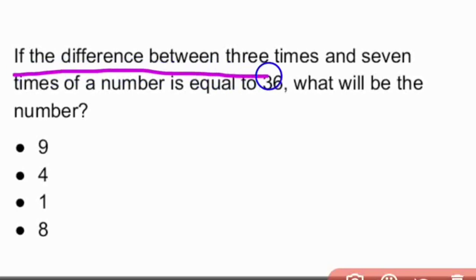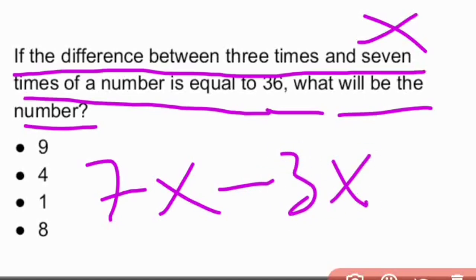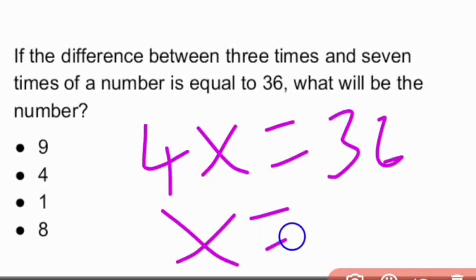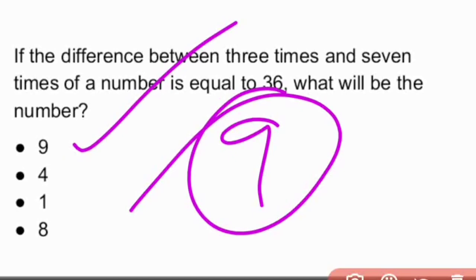If the difference between 3 times and 7 times of a number is equal to 36, what will be the number? First, let's take that number as x. The difference between 7 times of the number minus 3 times of the number is 36. So 7x - 3x = 36. This gives us 4x = 36. Therefore x = 36/4 which is 9. So our answer is 9. Option A is the right answer.